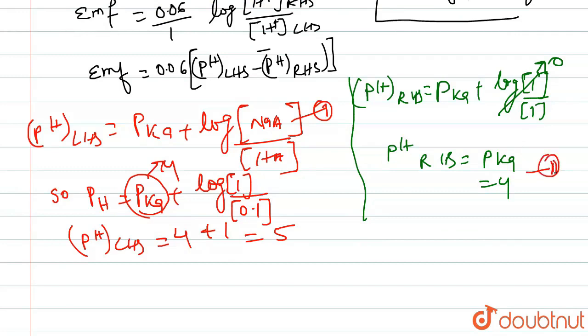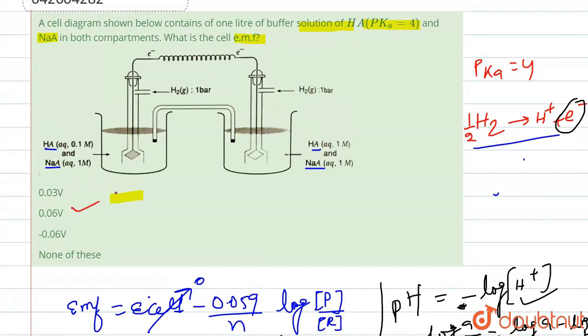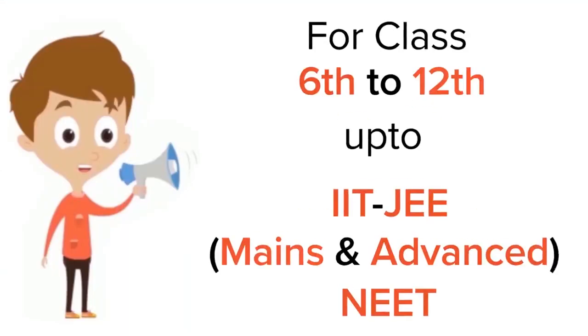So from here we are having both values. We are having the value of pH LHS and pH RHS. Let's put this in our equation. We are putting in our EMF equation. So EMF equals to 0.06, pH of LHS is 5, pH of RHS is 4. So this will be equals to 0.06.